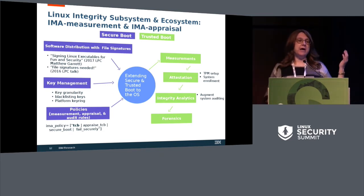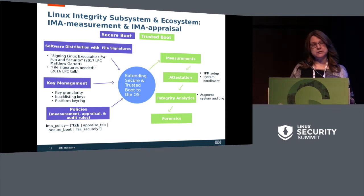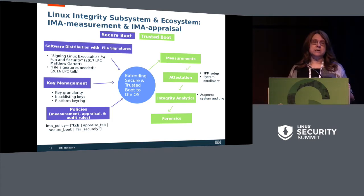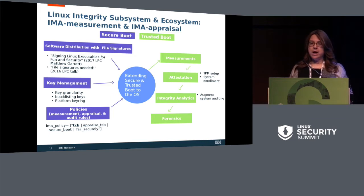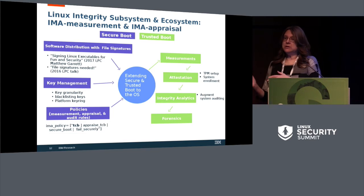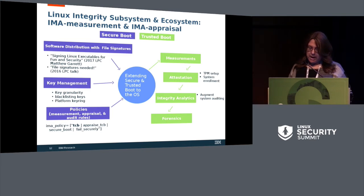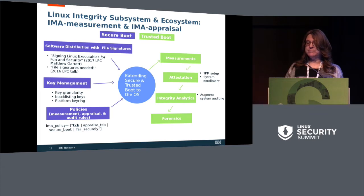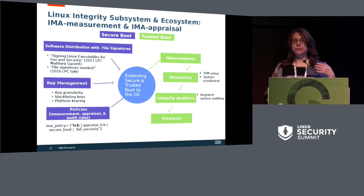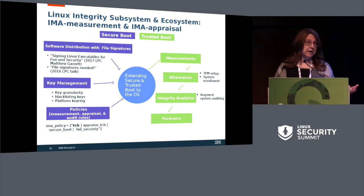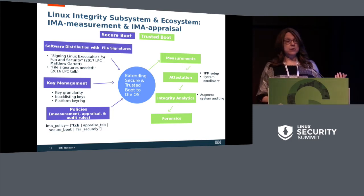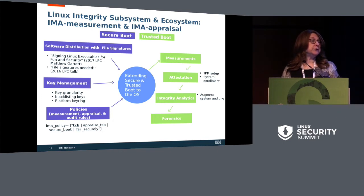After you have this measurement list, we said we don't necessarily trust the system on which these measurements are being used. So instead of verifying the measurement list on the local machine, there's a way of sending them to another machine that you do trust, and then you can verify those measurements. Those measurements can then be used as part of your analytics — augmenting existing analytics with the file hashes — and also used for forensics to know what has been run on your system.